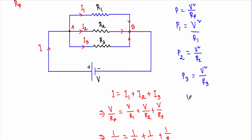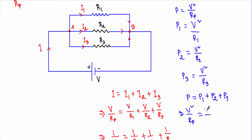Therefore the total supplied power equals the sum of the power drops across each resistor: P = P1 + P2 + P3, which gives V²/Rp = V²/R1 + V²/R2 + V²/R3.